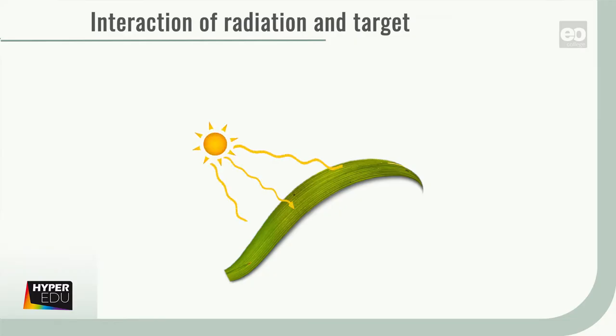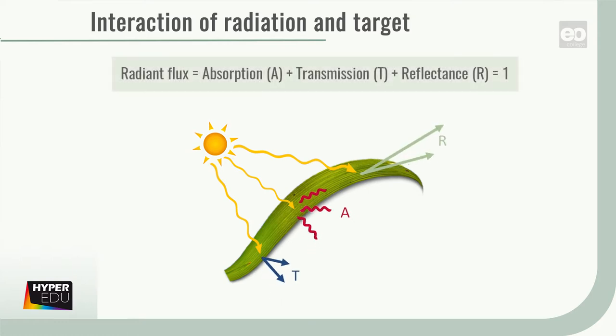As electromagnetic radiation falls on a surface, it is partly reflected, absorbed, and or transmitted, whereas the fractions vary depending on material and wavelength. Actually, this is the basis for most remote sensing applications.